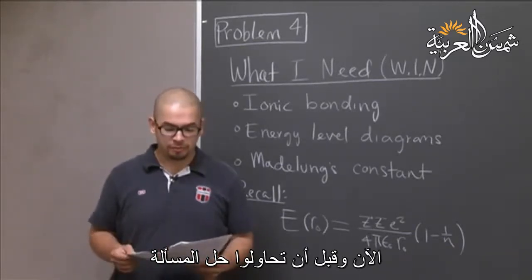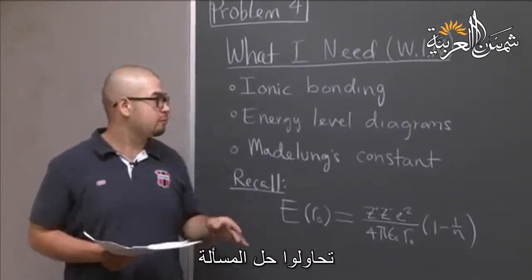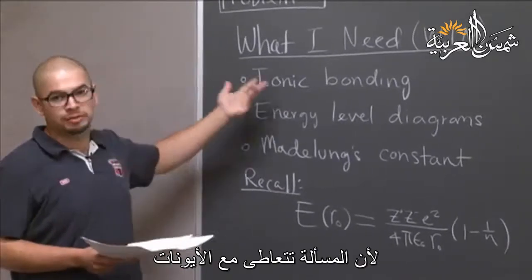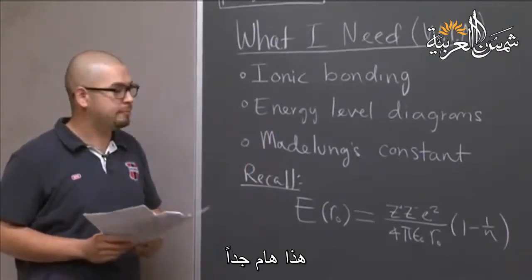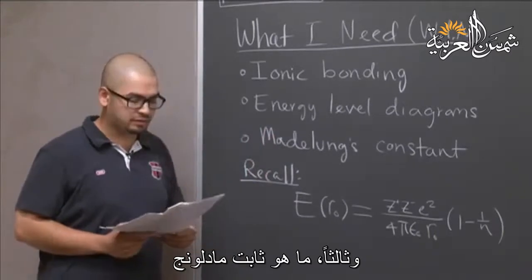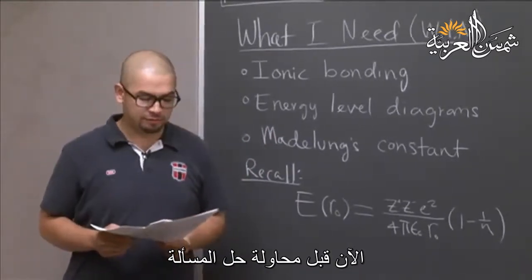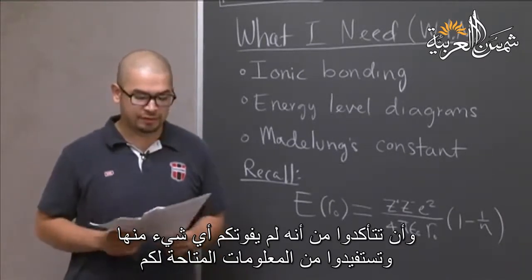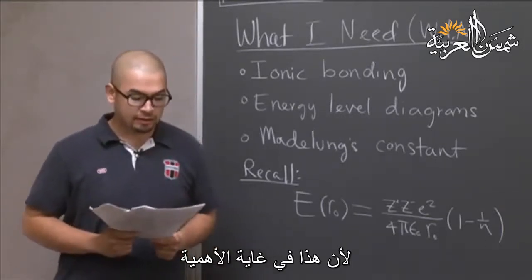Before you attempt the problem, there's certain background information that you should know before attempting it. One is knowledge in ionic bonding, because the problem deals with ions. Two, how to draw an energy level diagram, very important. And three, what Madelung's constant is. Before attempting the problem, it's a good thing to read the whole problem in detail and make sure you don't skip anything out of it, so that you get all the information that's given to you. Because that's very important.